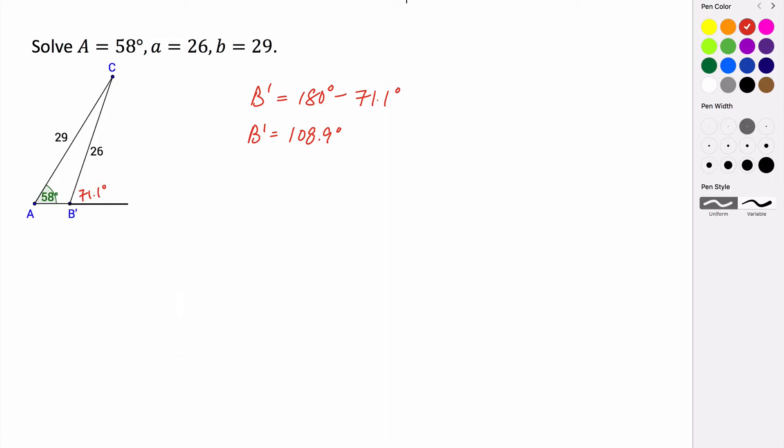So we found our first angle measure. This angle here is 108.9 degrees. And then we can find the measure of angle C'', our new angle measure. C' is just 180 minus the sum of our other two, so 58 degrees plus 108.9 degrees. And that turns out to be 13.1 degrees.